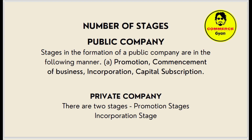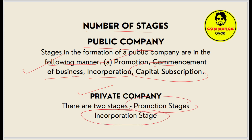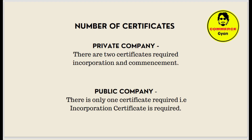Regarding the number of stages in formation: a public company has four stages — promotion, commencement of business, incorporation, and capital subscription. A private company has only two stages — the promotion stage and the incorporation stage.